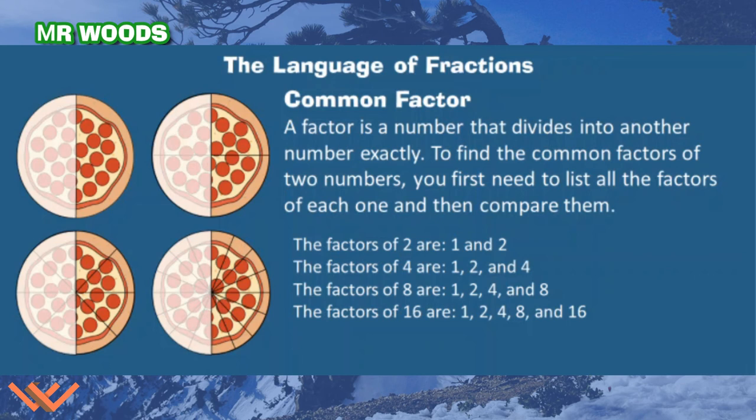So for example, look at all these pieces. I have this one divided in half. This one in fourths. This one in eighths. And this one in sixteenths. But for each, it's the same amount that's shaded. And I can look here. I can say the factors of 2 are 1 and 2. Factors of 4 are 1, 2, and 4. Factors of 8 are 1, 2, 4, and 8. And the factors of 16 are 1, 2, 4, 8, and 16.